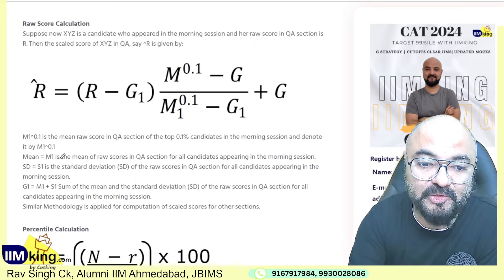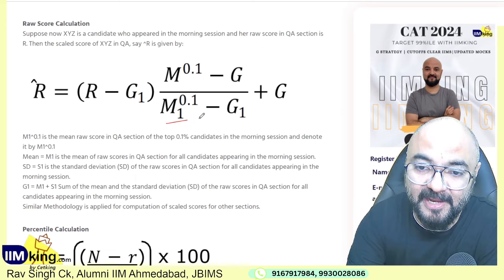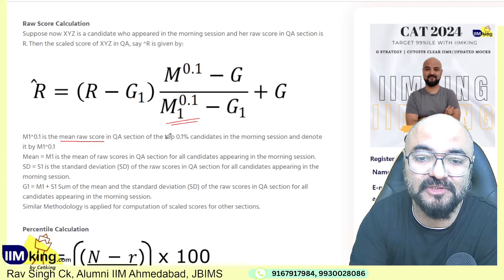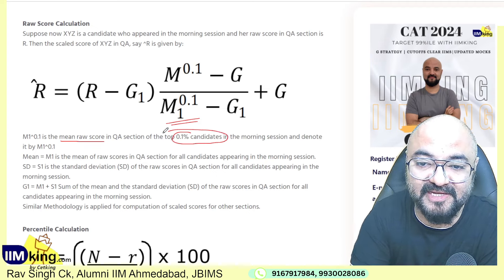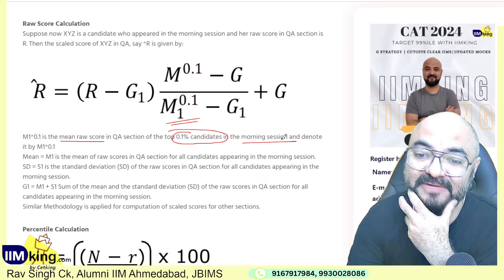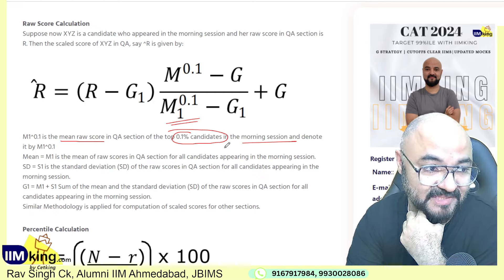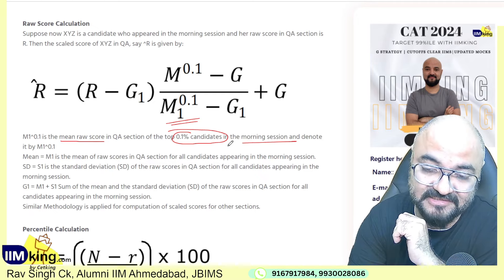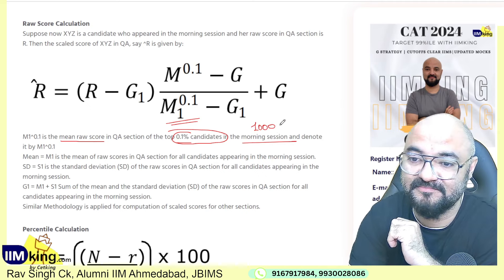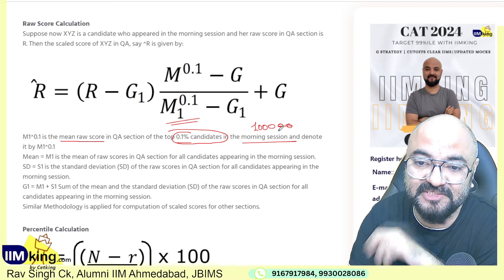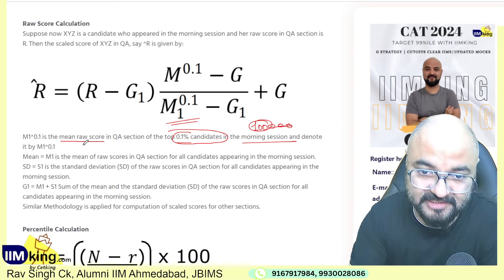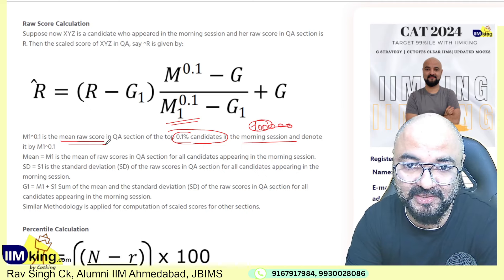Toh isme you are going to look at the mean — M1 is the mean raw score of the top one percent of candidates in the morning slot, same for afternoon slot and evening slot. Matlab, agar ek lakh bachche morning slot mein exam de rahe hain, total 3 lakh ne exam diya hai, toh ek lakh ka one percent is one thousand — us ka point one matlab top 100 people ka raw score dekhke aapka score calculate hoga.